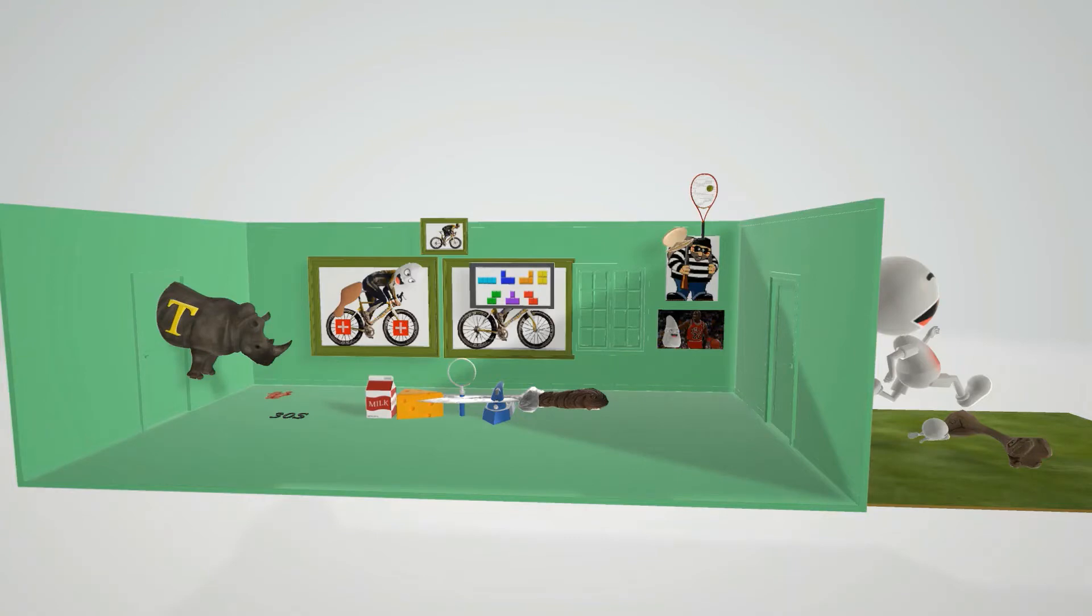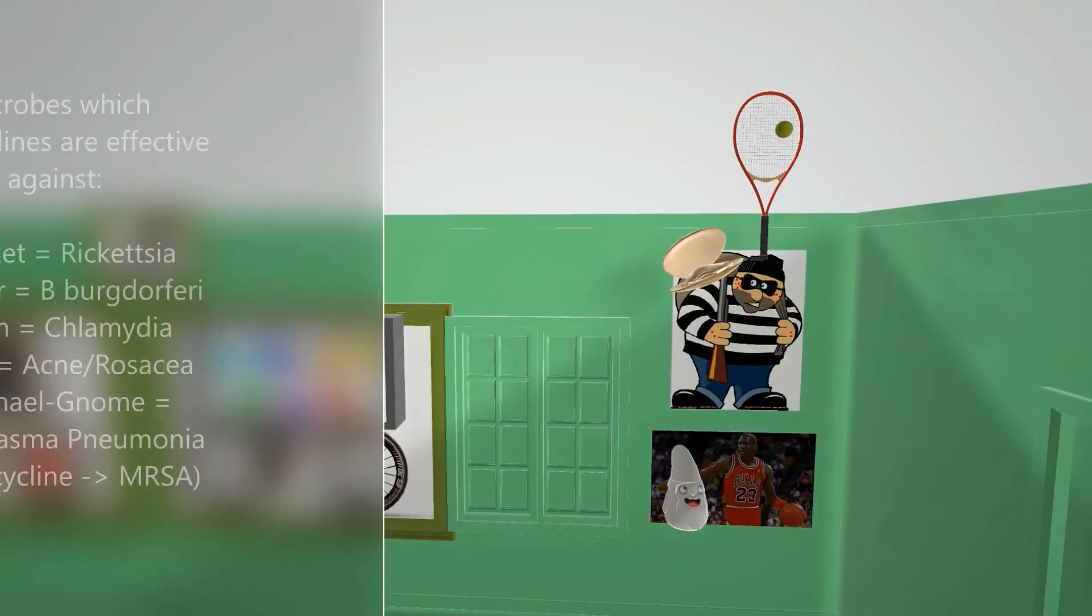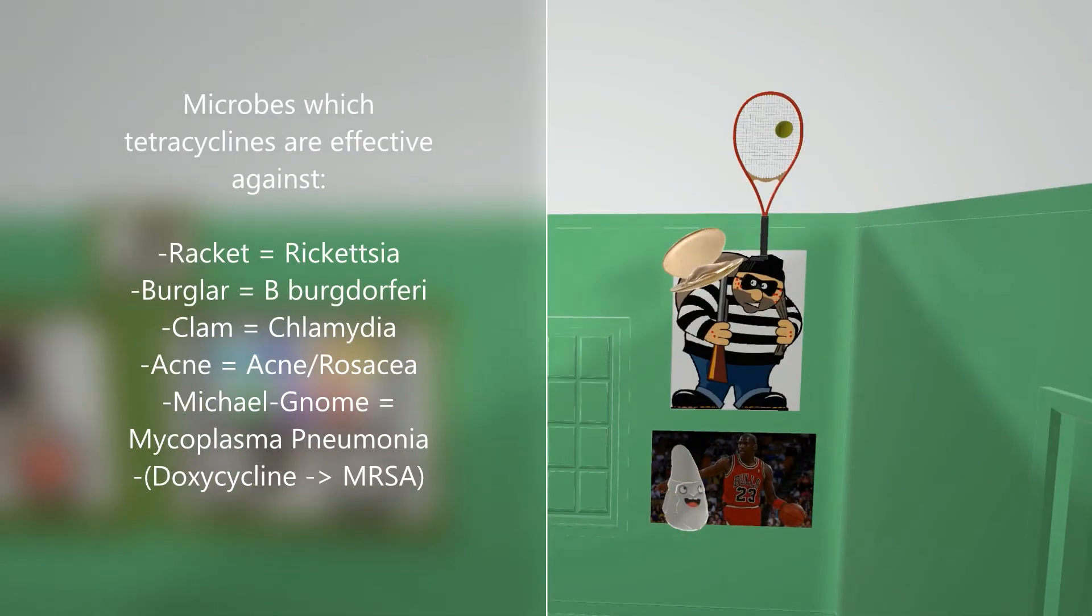Now let's talk about the clinical use of the tetracyclines. Here we see the tennis racket for Rickettsia, and this robber guy we'll call a burglar for Borrelia burgdorferi. He has on top of his rifle a clam for Chlamydia. He also has a lot of acne. Tetracyclines are used in the treatment of acne and rosacea.